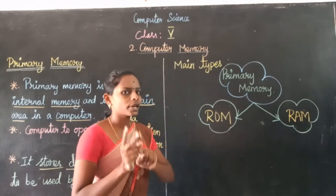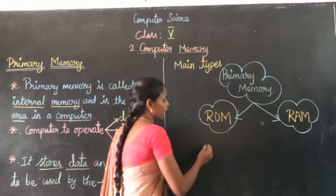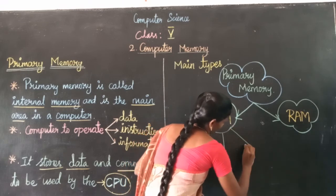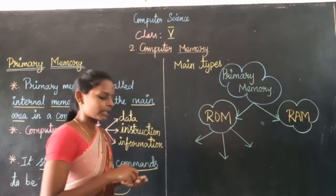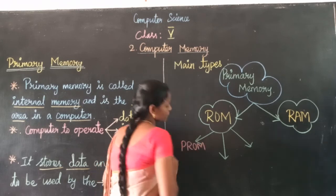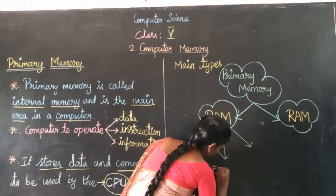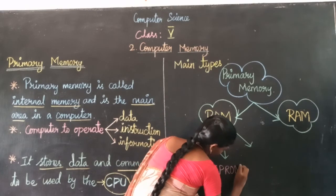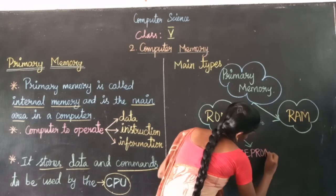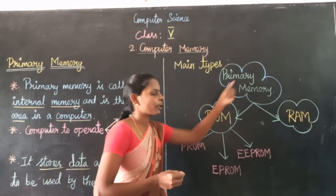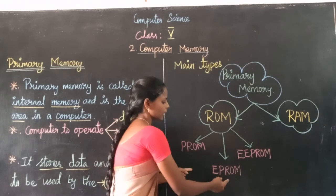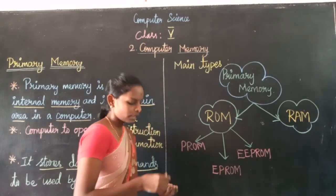ROM is classified into three types. First one is EPROM, second one is EEPROM, and third one is EEPROM. So ROM has three sub-types.